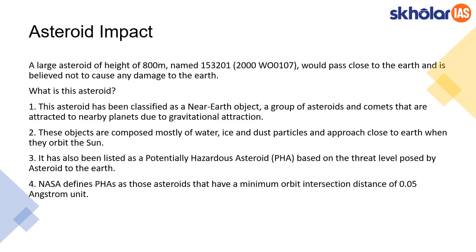The asteroid has been classified as a near-earth object. Any group of asteroids or comets that are attracted to nearby planets due to the planet's gravitational attraction are referred to as near-earth objects. These objects are mostly composed of water, ice, and dust particles, and they come close to the earth when they are orbiting around the sun. This particular asteroid has been listed as a potentially hazardous asteroid, or PHA.